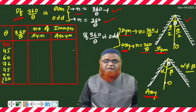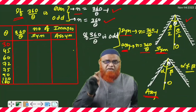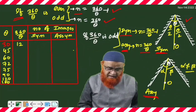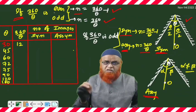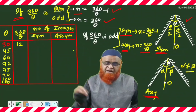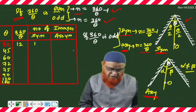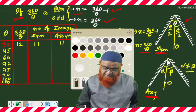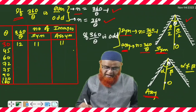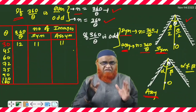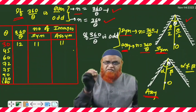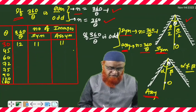For 30 degrees, 360 divided by 30 is 12, which is an even number. The condition for even is n = (360/θ) − 1, so the answer is 11. Your answer is 11 in both the symmetry and asymmetry cases. Since it is an even case, there are no sub-conditions here.